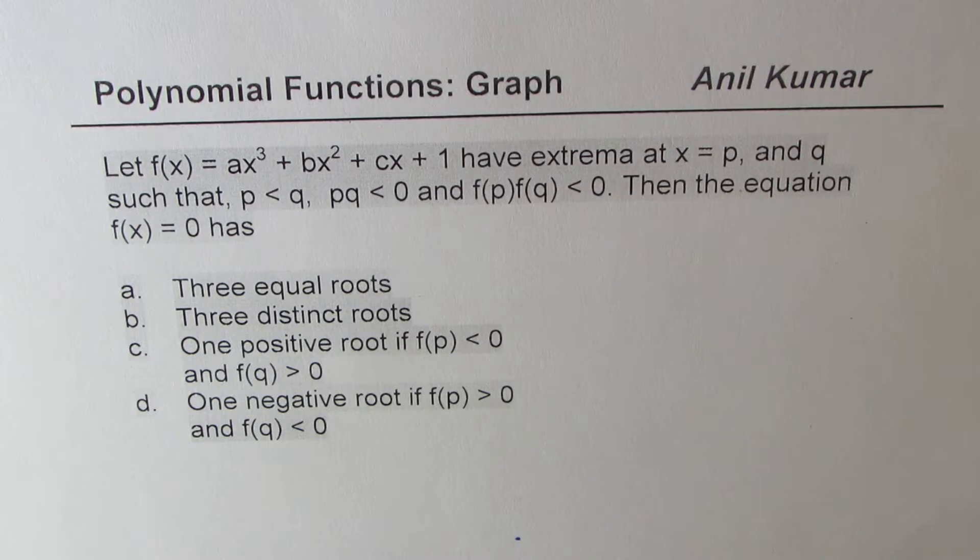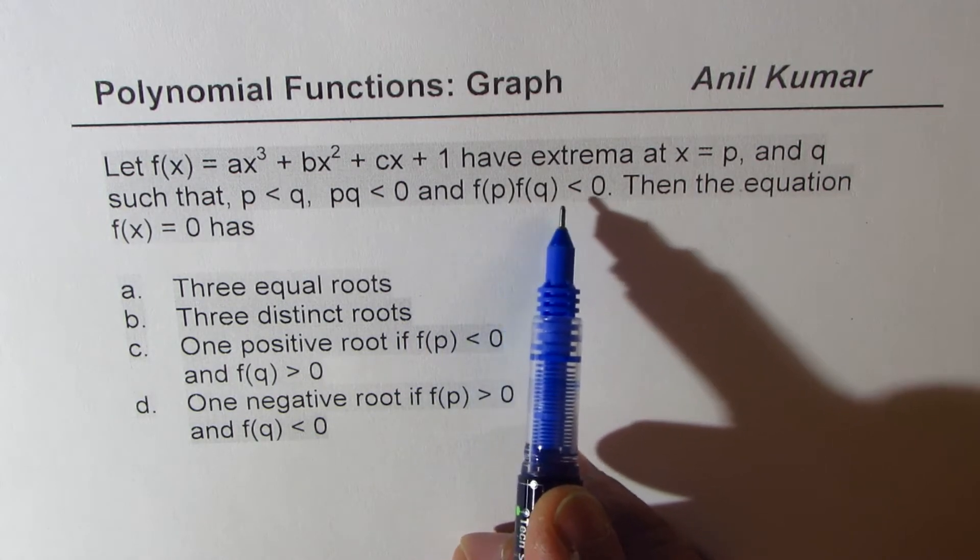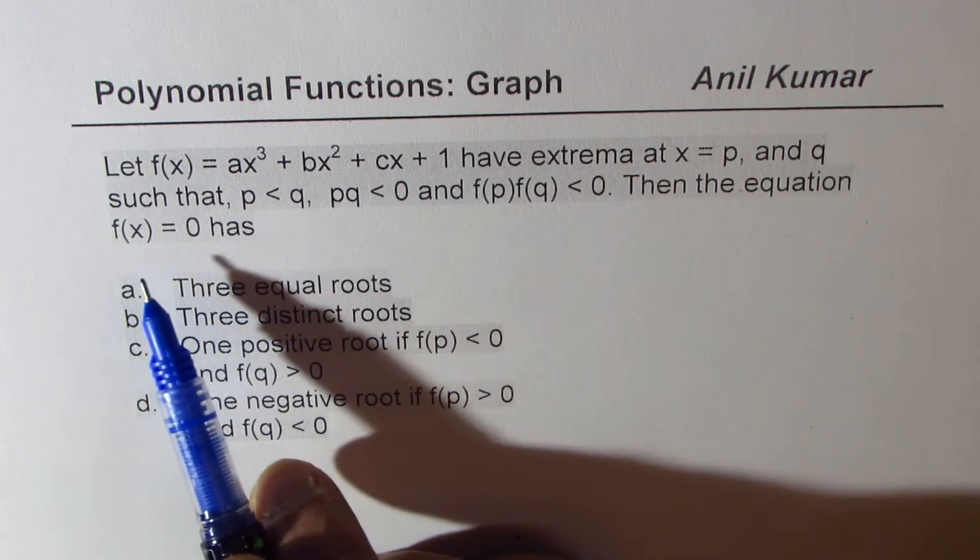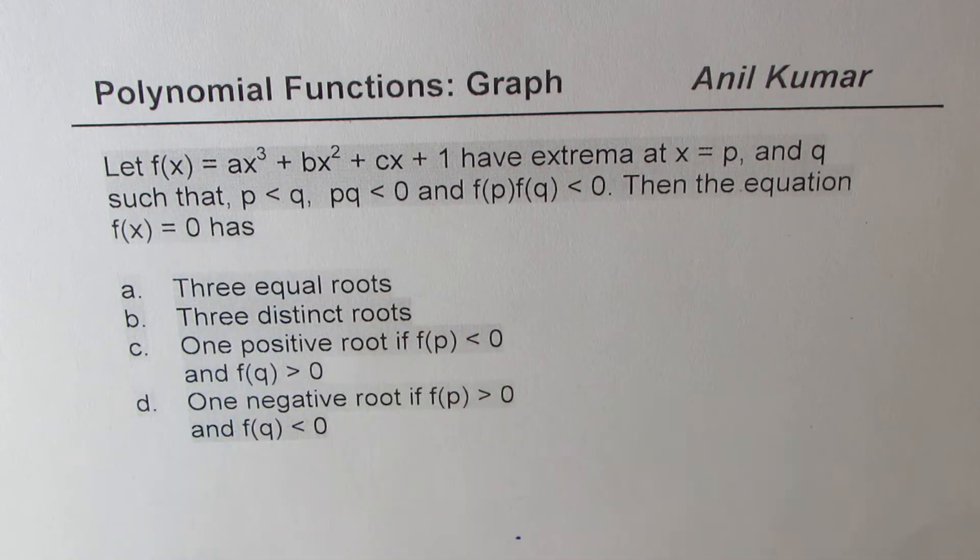The question here is, let f(x) = ax³ + bx² + cx + 1 have extrema at x = p and q, such that p is less than q, pq is less than 0, and f(p)f(q) is also less than 0. Then the equation f(x) = 0 has: three equal roots, three distinct roots, one positive if f(p) < 0 and f(q) > 0, one negative root if f(p) > 0 and f(q) < 0.